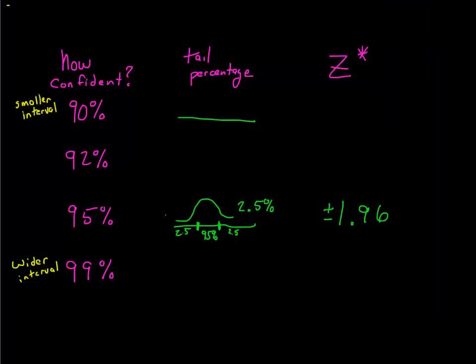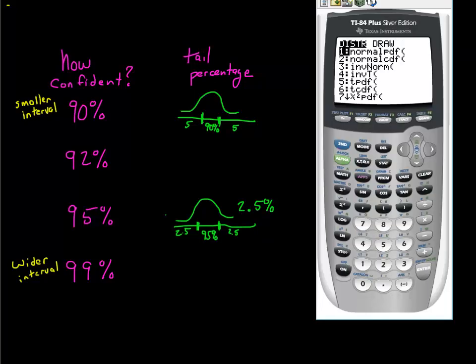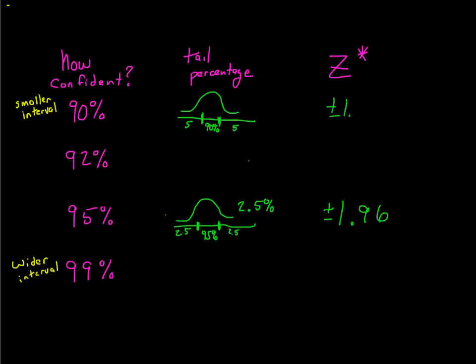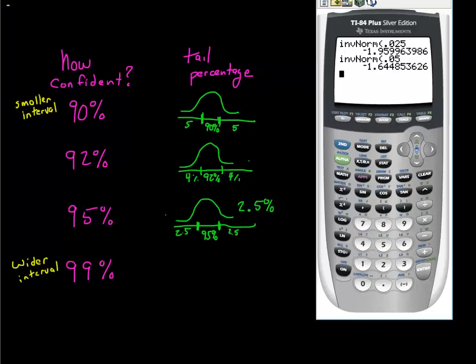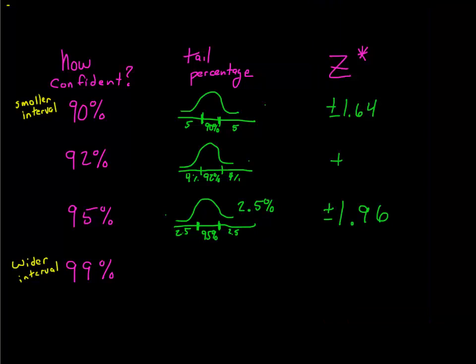For 90% confidence: 90% in between means 10% left out — 5% on the bottom tail, 5% on the top tail. You do invNorm(0.05) and get a Z* of 1.64, so ±1.64. That creates a smaller interval because the Z* is smaller. For 92% confidence: 8% left out means 4% on each tail. invNorm(0.04) gives Z* = ±1.75.